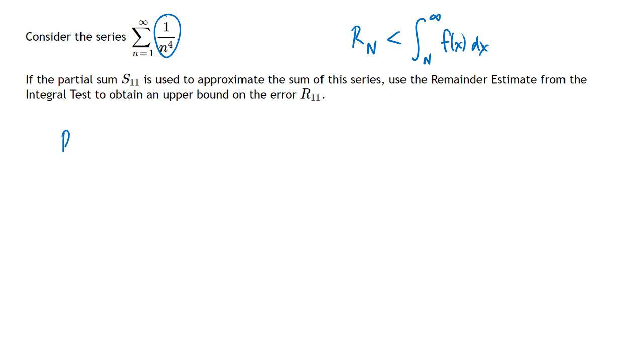The formula we're going to be using here is that R sub n is less than the integral from n to infinity of f of x dx, where f of x is the formula that we're using for our integral. In this case, that would tell us that R11 is less than the integral from 11 to infinity of 1 over x to the 4th dx. So all we have to do is work out that improper integral, and that will give us our upper bound on our error.